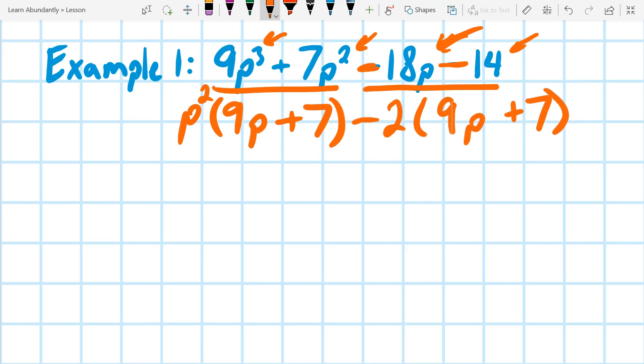Now, if you've done factoring trinomials this way, then this is going to jump right out at you, that we have 9p plus 7, 9p plus 7, so our first factor is going to be 9p plus 7.